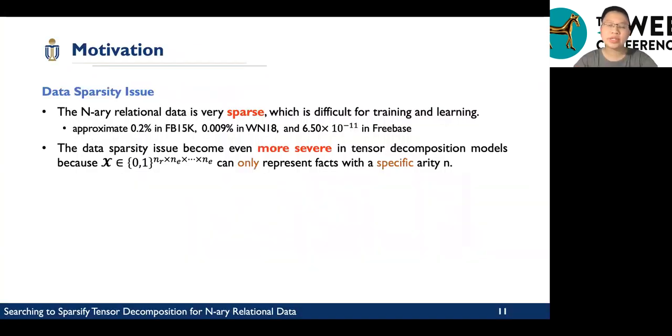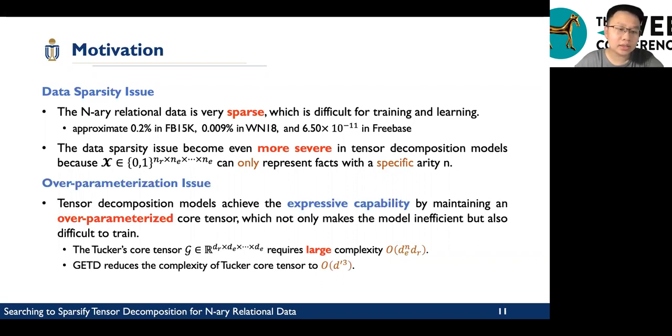Among the tensor decomposition models, although they achieve better empirical performance and guarantees, we still found two problems. The first is data sparsity issue. The n-ary data is very sparse, which is difficult for training and learning. And this problem will be even worse in tensor decomposition models because the tensor can only represent the facts with a specific arity M. This means that tensor decomposition models can only learn from part of facts in the knowledge base. Second, over-parameterization issues. The tensor decomposition models achieve expressive capabilities by maintaining an over-parameterized core tensor, which not only makes the model inefficient but also difficult to train. The Tucker core tensor G requires larger model complexity. Although GETD reduces the complexity to cubic complexity, it is still too large.